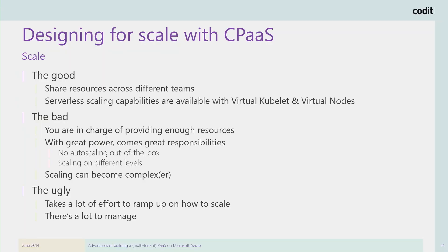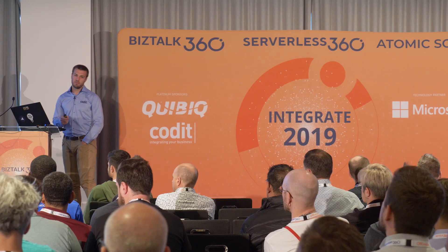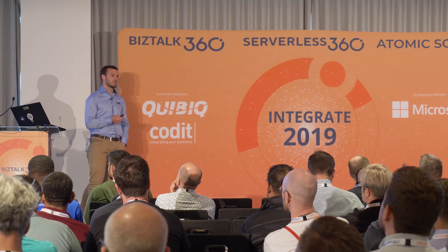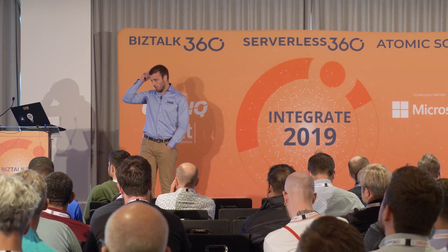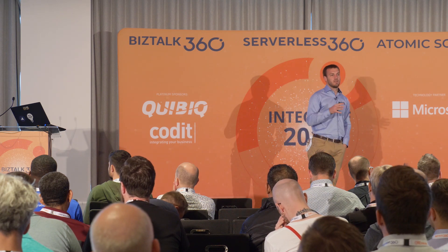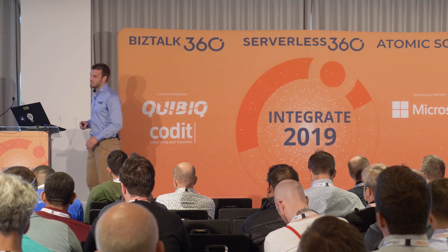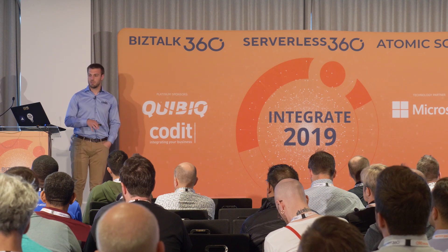The bottom line: none of these approaches are bad, and none are the silver bullet. Use the tool you need, evaluate your options, check your scaling needs, understand the trade-offs, and learn how to use them. Don't over-engineer. Maybe you can start with Azure Functions today, and in one year, when your customer base has increased by 1,000%, it's time to move to something with better scalability. But not today — always start as high up the stack as possible, then go down.